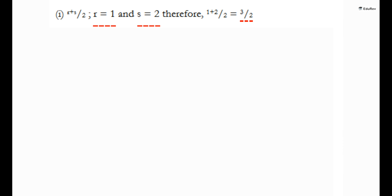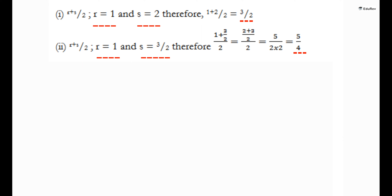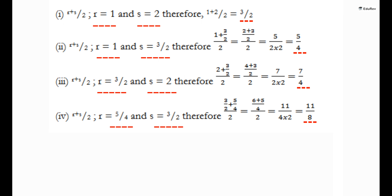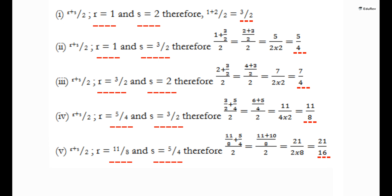Now, recall that to find a rational number between R and S, you can add R and S and divide the sum by 2. That is, R plus S divided by 2 lies between R and S. So, 3 by 2 is a rational number between 1 and 2. You can proceed in this manner to find 4 more rational numbers between 1 and 2. These 4 would be 5 by 4, 11 by 8, 21 by 16 and 7 by 4.